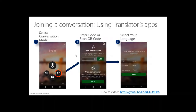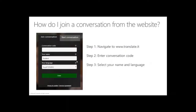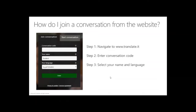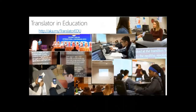If you're joining from a browser rather than the Translator app, you get a window where you navigate to the URL, enter the conversation code, specify your name and language, and then enter the conversation — very similar to what was shown with the captions on screen.